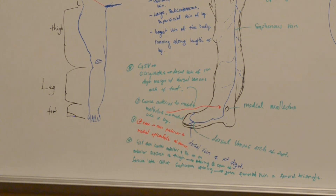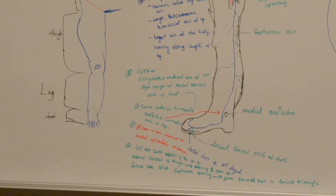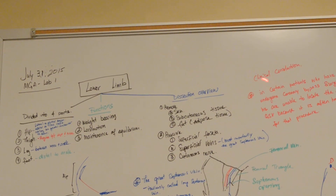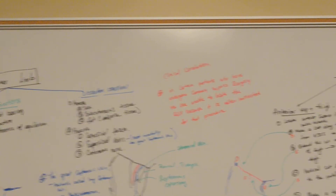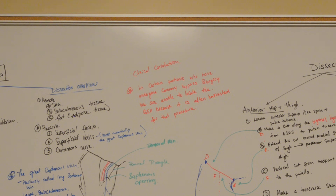The great saphenous vein then courses anteriorly, lying on the anterior surface of the thigh, before it enters the opening in the fascia lata called the saphenous opening. It then joins the femoral vein in the femoral triangle, which contains the femoral vein, femoral artery, and nerve. Clinically, in patients who have undergone coronary bypass surgery, we are often unable to locate the great saphenous vein because it is frequently harvested for that procedure.